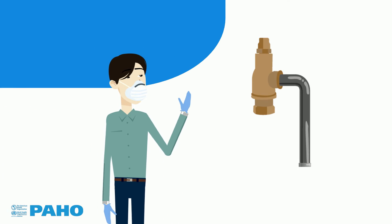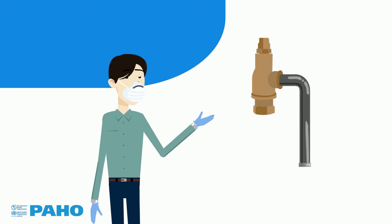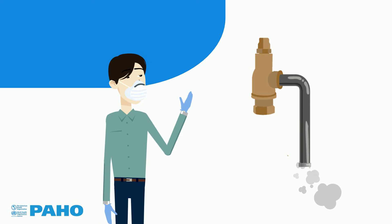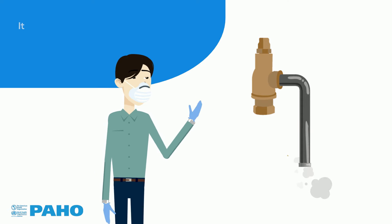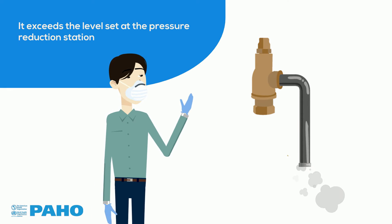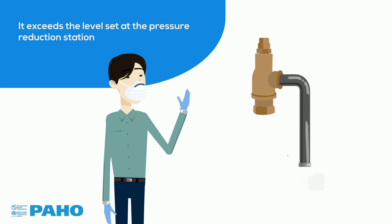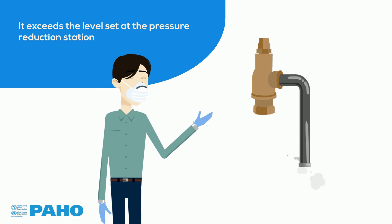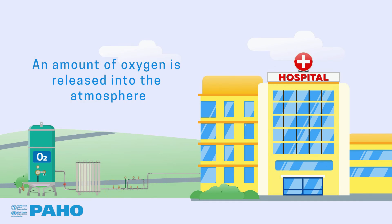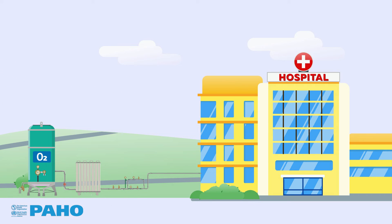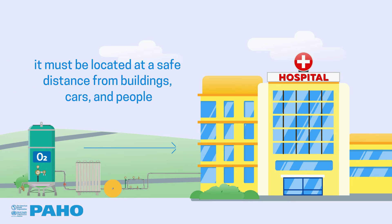The safety valve relieves pressure from the network if, for any reason, it exceeds the level set at the pressure reduction station. When this valve is activated, an amount of oxygen is released into the atmosphere. Accordingly, it must be located at a safe distance from buildings, cars, and people.